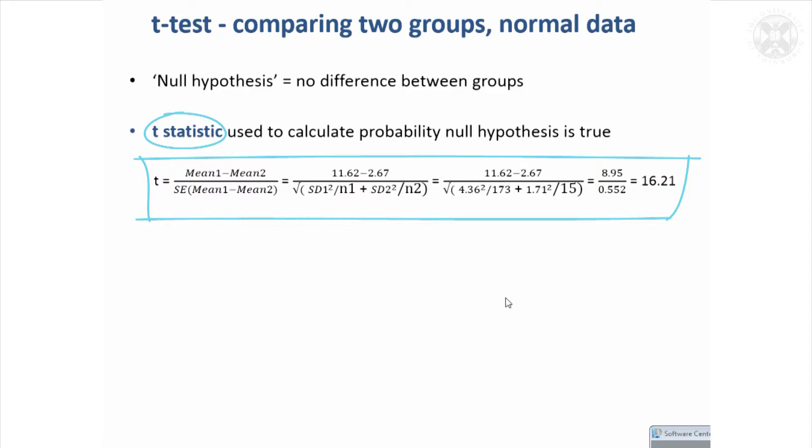We get the difference in the two means, there's 8.95, big difference between the means. And we want to see how likely that is to be different from zero given the standard error. And the standard error of that difference is quite small compared to the size of the difference.